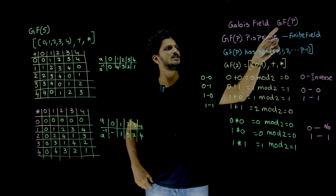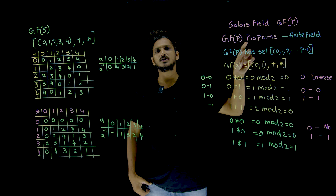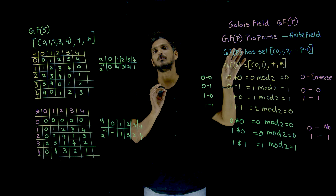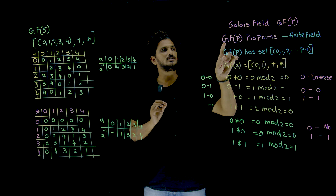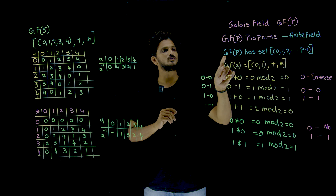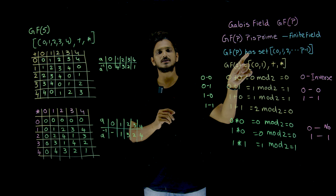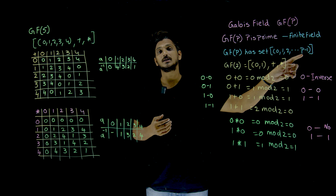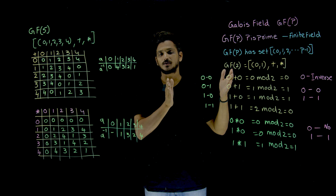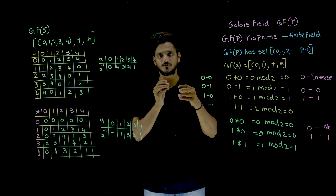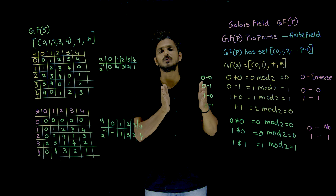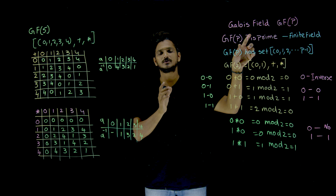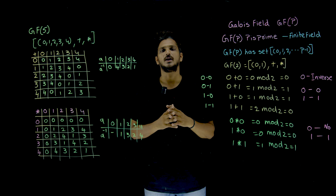Galois field is given by GF of p, where p means prime numbers. GF of p means that set contains elements 0, 1, 2, 3 up to p minus 1. So the Galois field set contains elements from 0 up to p minus 1.